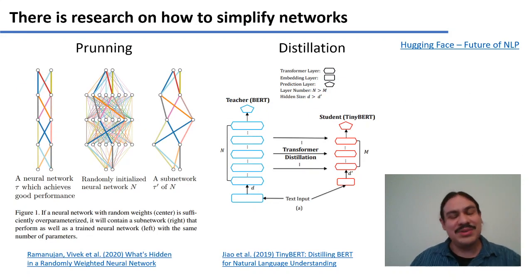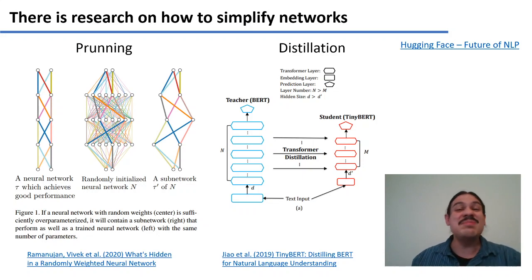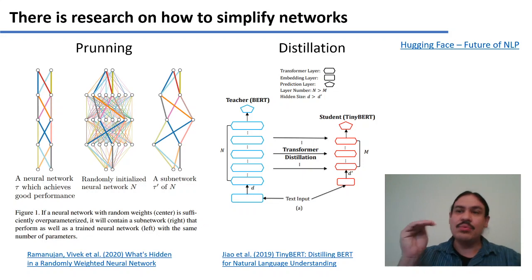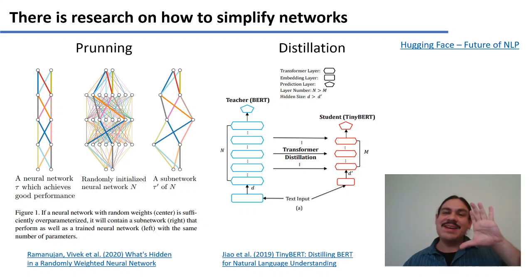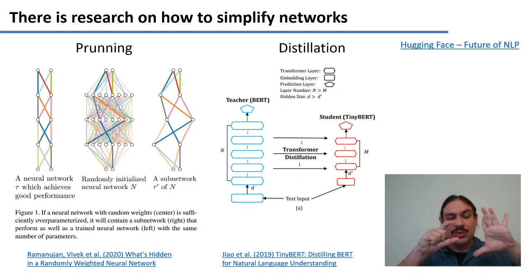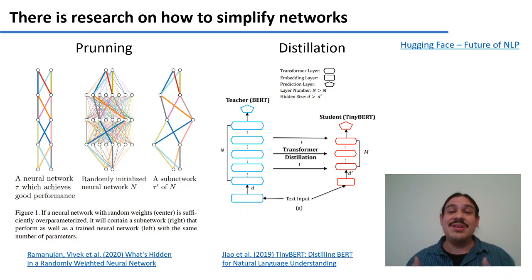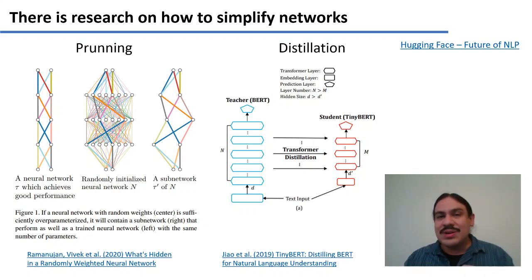There is some research, thankfully, for this particular problem. For example, trying to simplify networks: you can prune weights and even prune layers to try to make a large network more lightweight. You can use something called distillation — taking a big BERT and trying to teach a smaller BERT how to get the same results. So there is some research on how to make these models more environmentally friendly and easier to run.